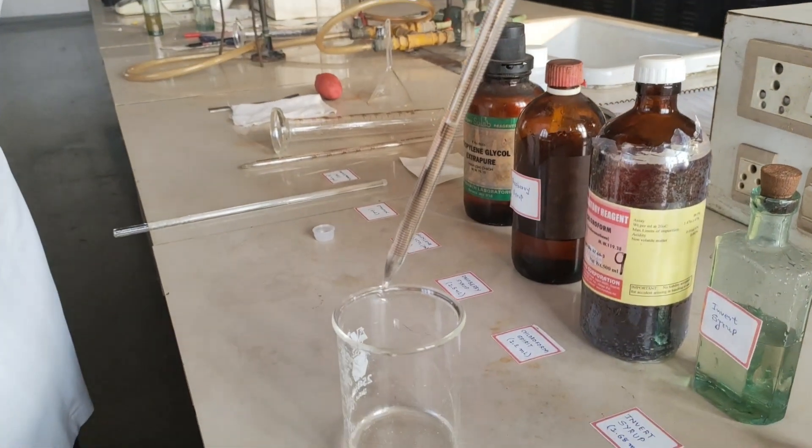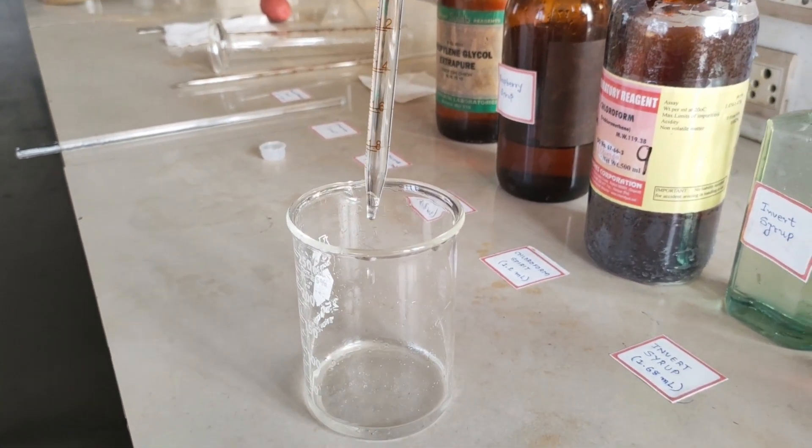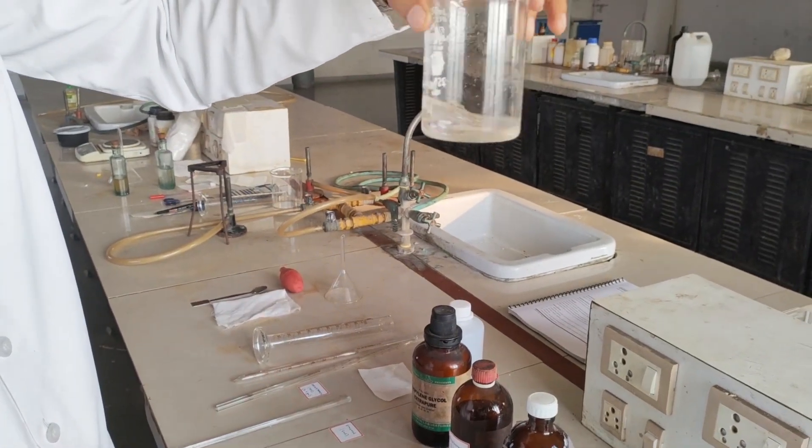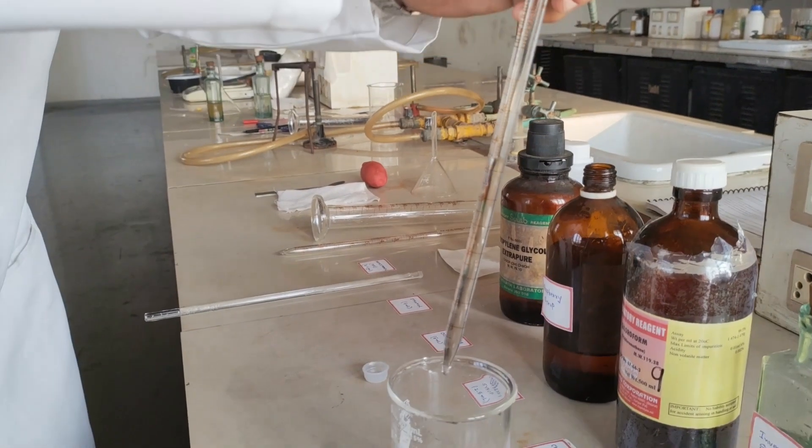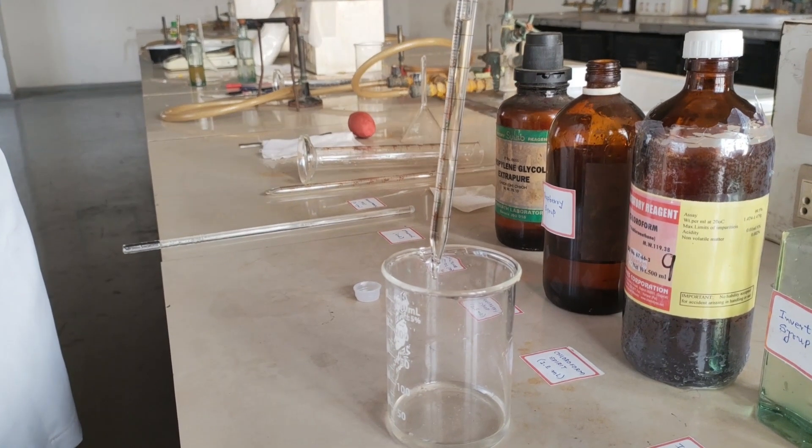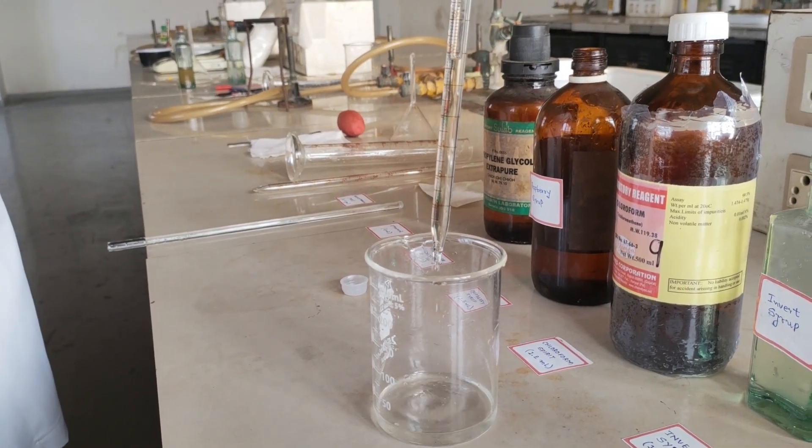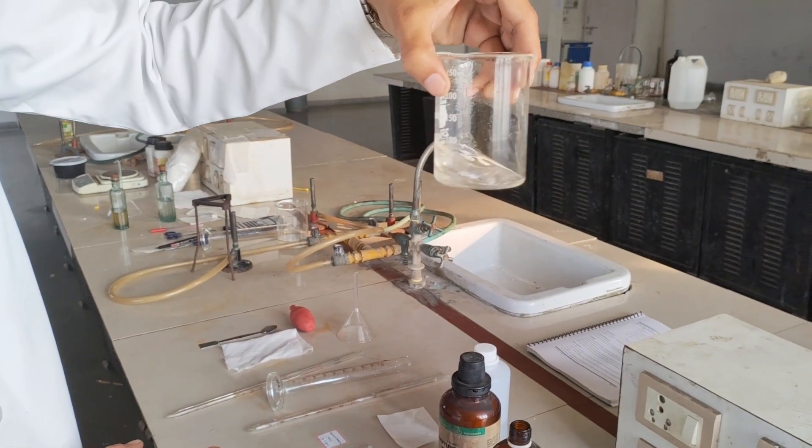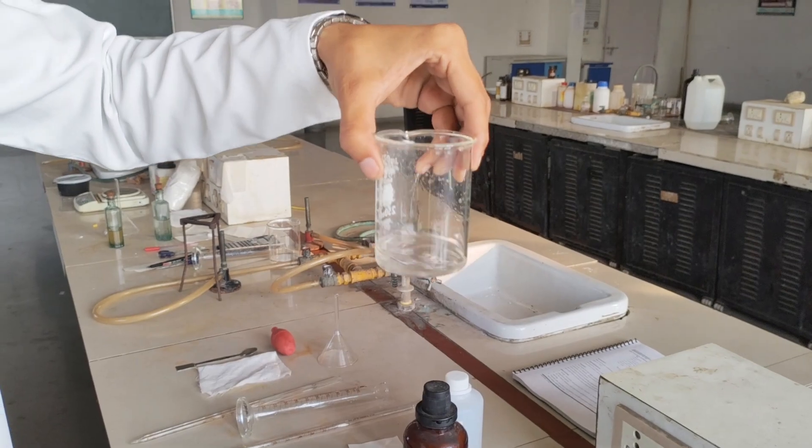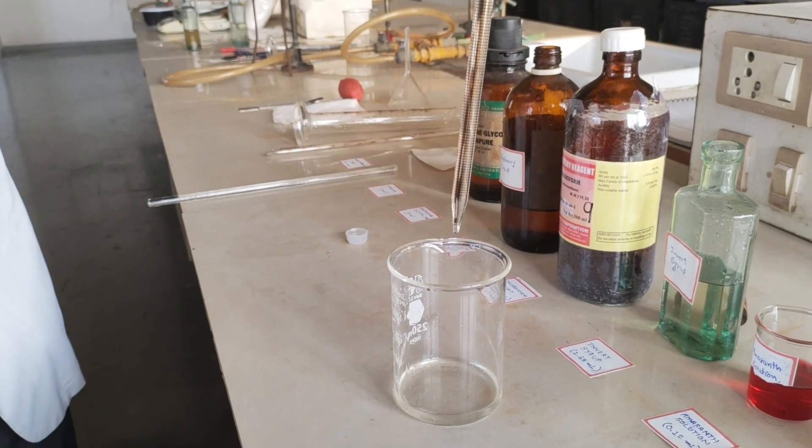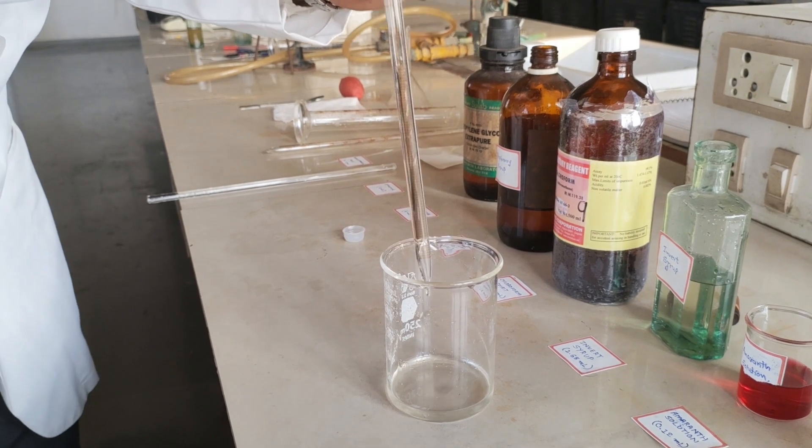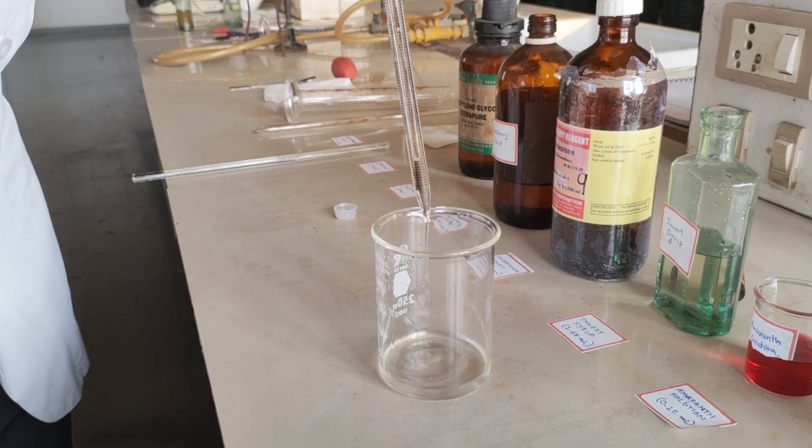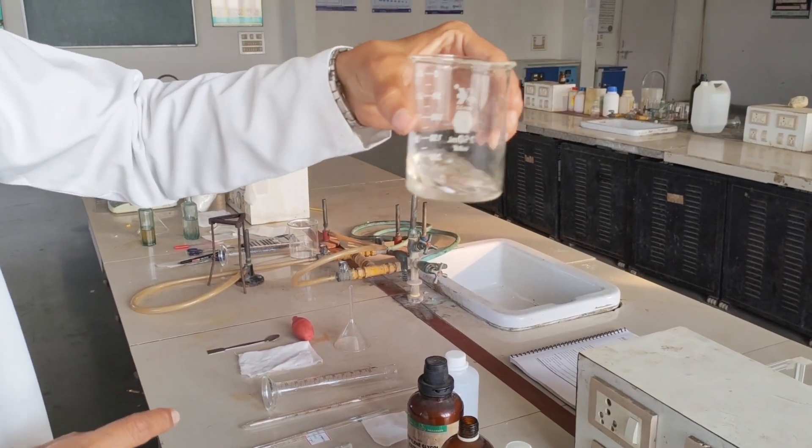Add chloroform spirit 1.2ml, mix it thoroughly. Now add raspberry syrup 1.5ml, mix it well. Now add 1.68ml of invert syrup. Mix it well after adding the invert syrup.